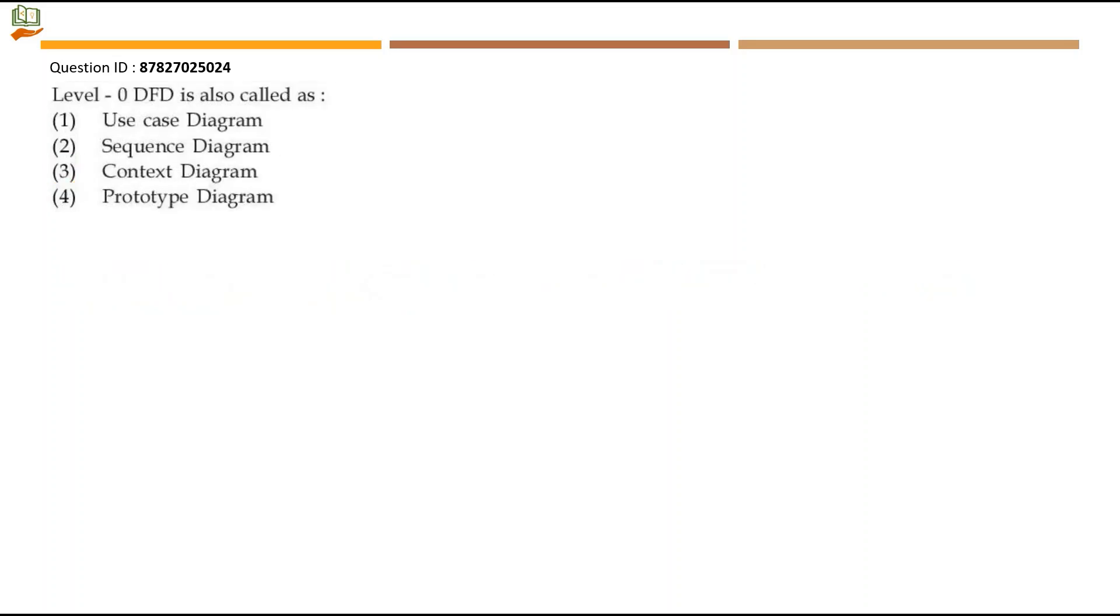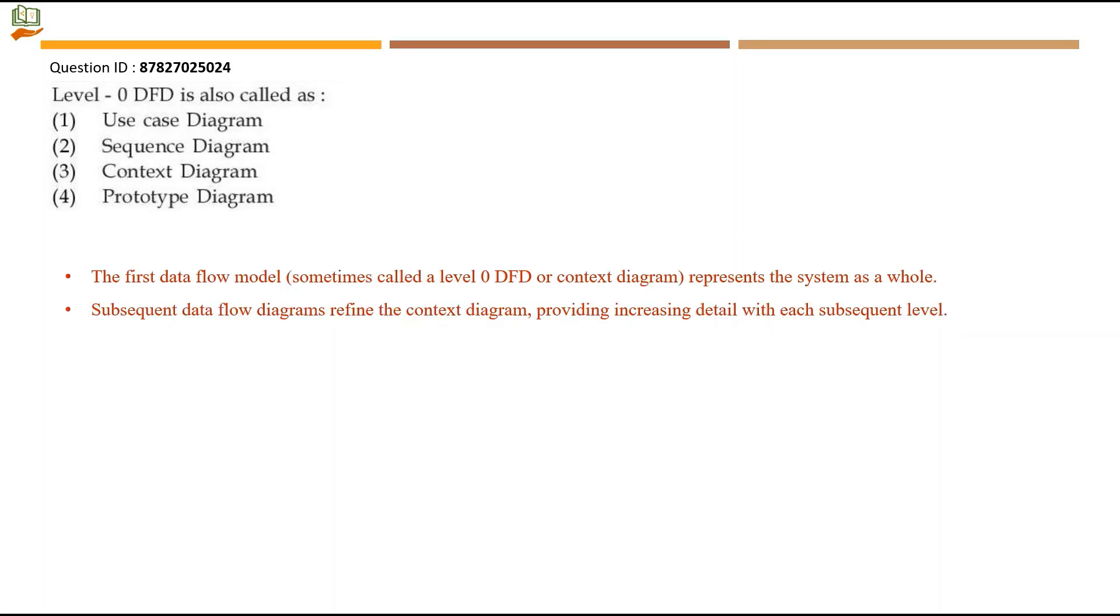Next question: Level 0 DFD is also called as - The first data flow model, sometimes called a level 0 DFD or context diagram, represents the system as a whole. So what does level 0 DFD mean? It's a context diagram. Option 3 will be the right answer.